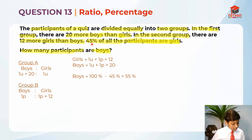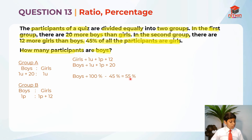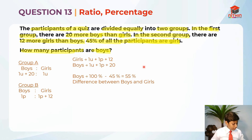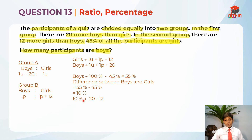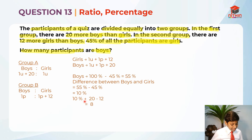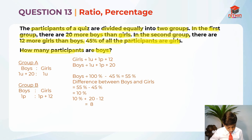We know the percentage of girls is 45%, so we can find the percentage for boys: 100% minus 45% equals 55%. The difference between boys and girls is 55% minus 45%, which is 10%. Now, 10% refers to 20 minus 12. I know many of you are stuck here — why is the difference between boys and girls equal to 20 minus 12?